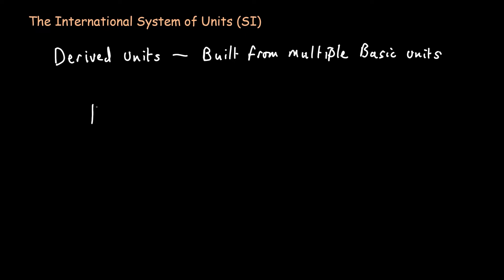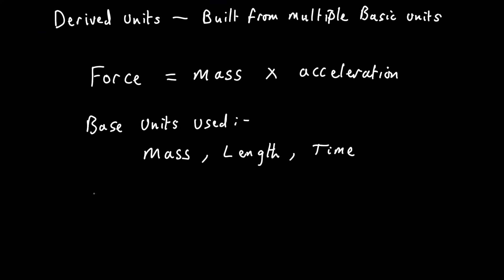Another example of a derived unit is force. Force equals mass times acceleration and in this example it uses three base units: kilograms, meters and seconds. The unit force is given the name newton or it can be expressed as kilogram meter per second squared. There are many more quantities like these that can be built up from a combination of basic units.